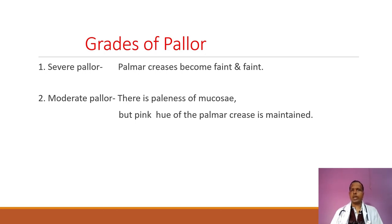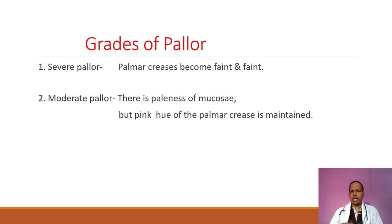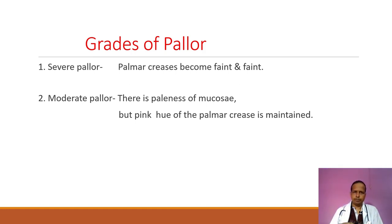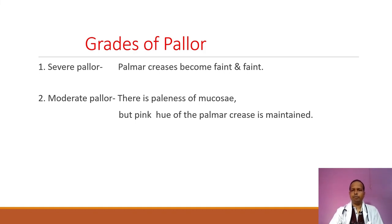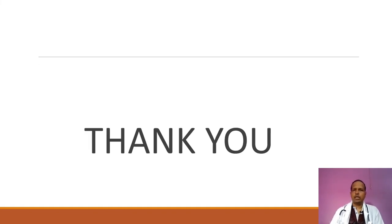What are the grades of pallor? Pallor is categorized into two categories. Number one is severe pallor, where the palmar crease becomes faint. Number two is moderate pallor, where paleness of the mucosa is present but the pink hue of the palmar crease is maintained. These are the two categories of pallor.